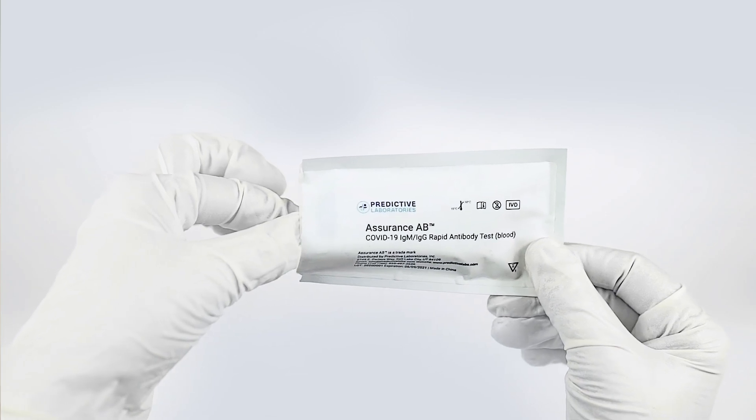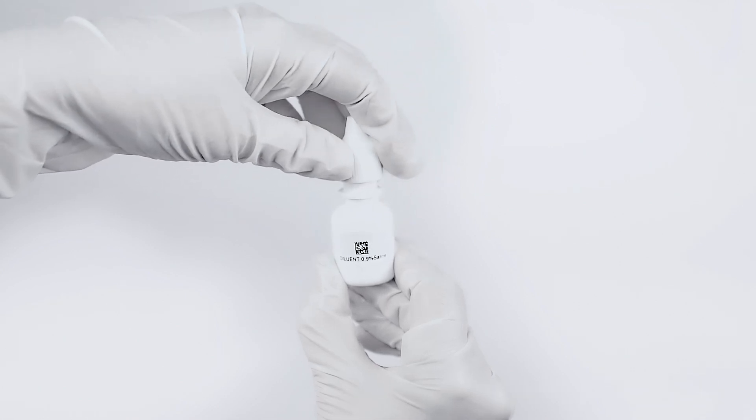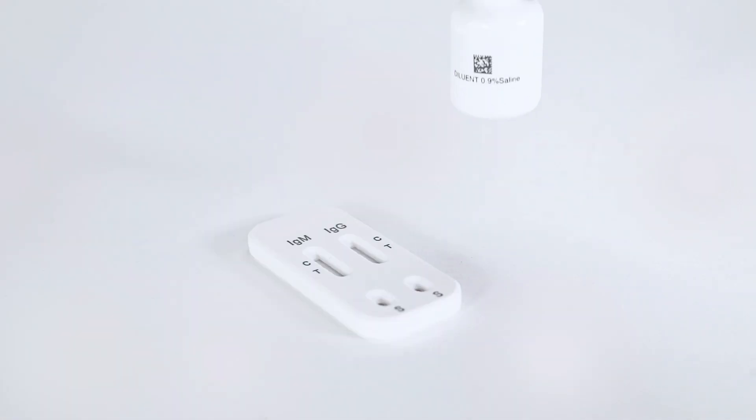Remove the test cassette from the foil wrapping and place on a flat surface. Next, you will remove the lid to the solution diluent and set next to the cassette.